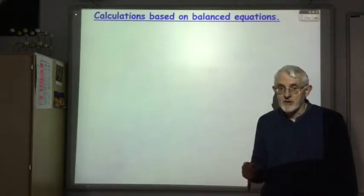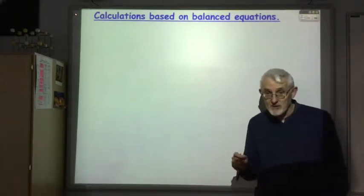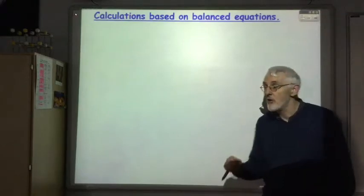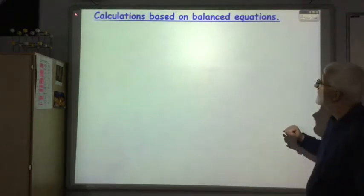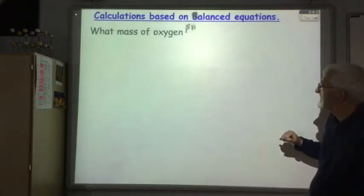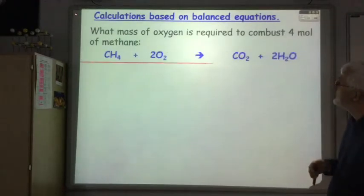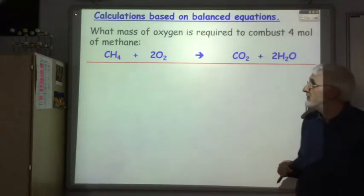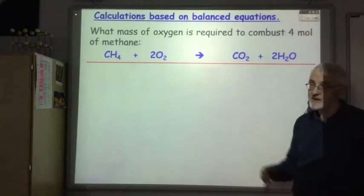Before we start with the first question, I'd like to just briefly remind you of the method we're going to use for all eight questions. So the questions take this sort of format: What mass of oxygen is required to combust four moles of methane? And you're given the balanced equation.